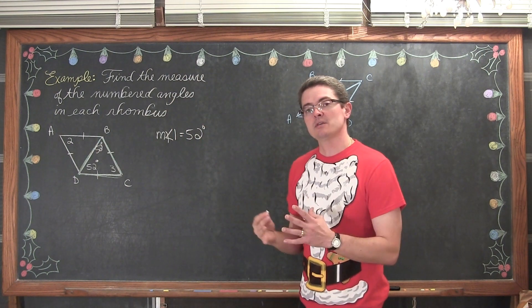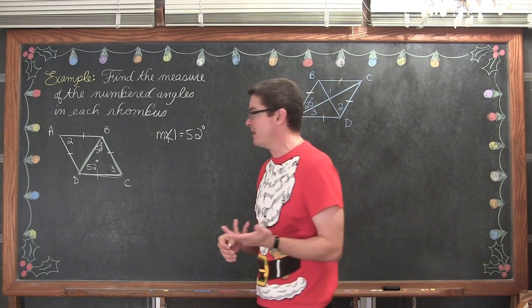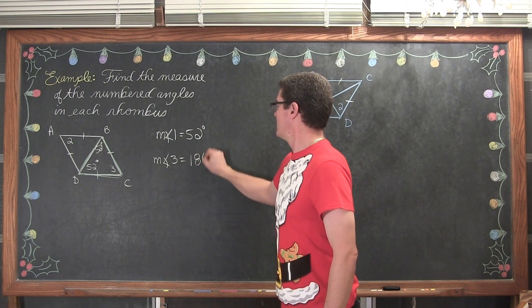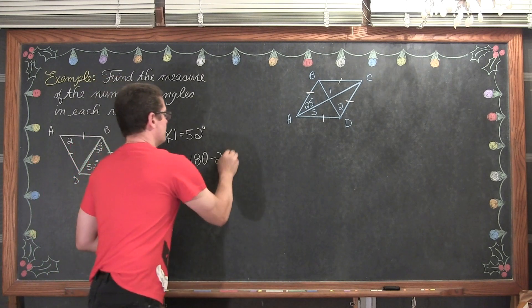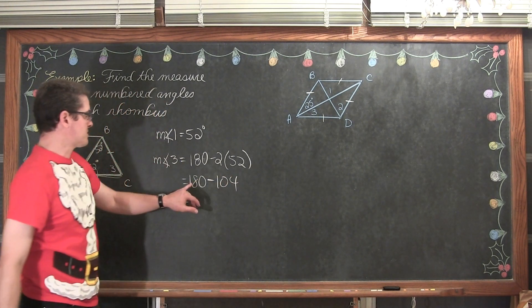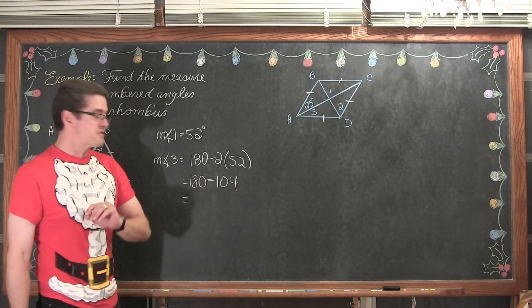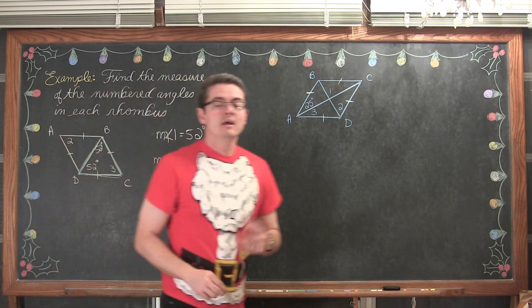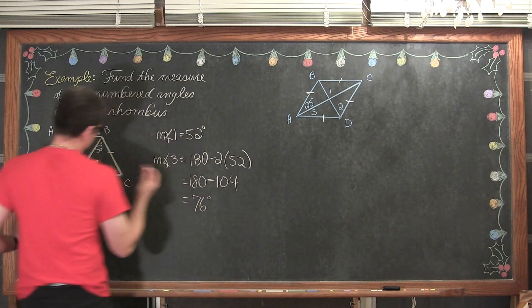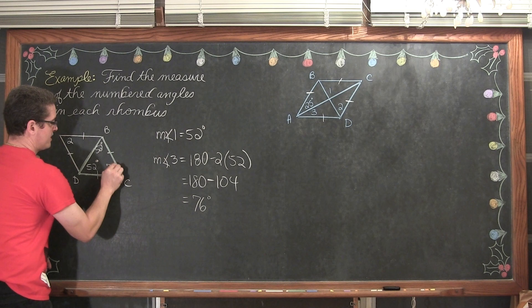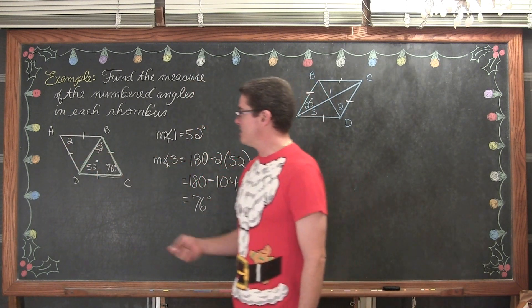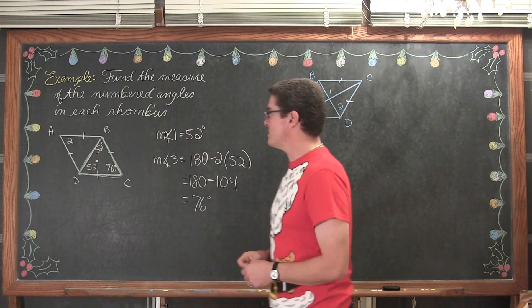Now, the interior angles of a triangle add up to 180 degrees. So the measure of angle 3 is going to be equal to 180 minus two of these base angles, both of which are 52 degrees. So we have 180 minus 104, which means that the measure of angle 3 is equal to 76 degrees. And remembering that a rhombus is a special type of parallelogram, our opposite angles are going to be congruent, so if angle C is 76 degrees then angle A is also going to be 76 degrees.